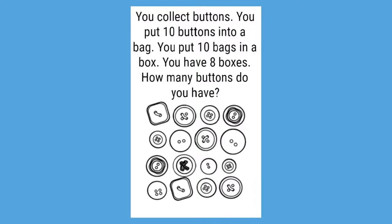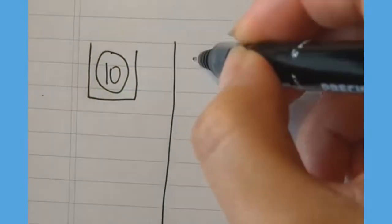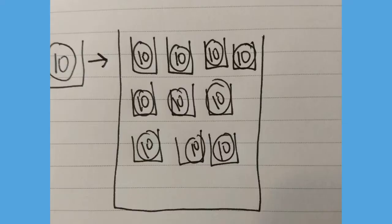Next, you put ten bags in a box. You are now going to draw ten bags in a box, and do not forget about the buttons. So you're going to take your bag with the ten buttons, and you're going to draw this ten times in a box. There's my big box, and then I'm going to draw my bag with my ten buttons. Remember, you have to do this ten times. So here is my ten bags with my ten buttons.